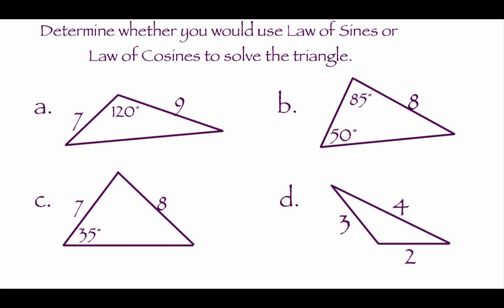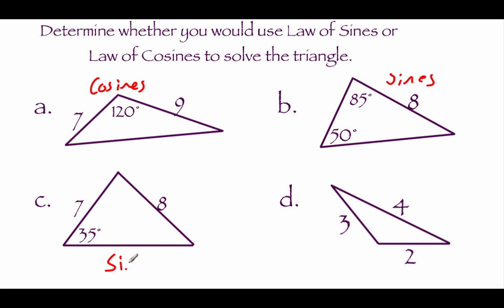The last thing we're looking at is determining whether to use the law of sines or law of cosines based on the setup of a triangle. To use the law of sines, we need opposite pieces of information — if we have an angle, we need its opposite side. Otherwise, we use the law of cosines. In picture A, we've got a 120 degree angle but don't know the side across from it — law of cosines. In B, we've got a 50 degree angle and its opposite side — law of sines. Similarly, C has a 35 degree angle and its opposite side — law of sines. In D, we don't have any angles — law of cosines.